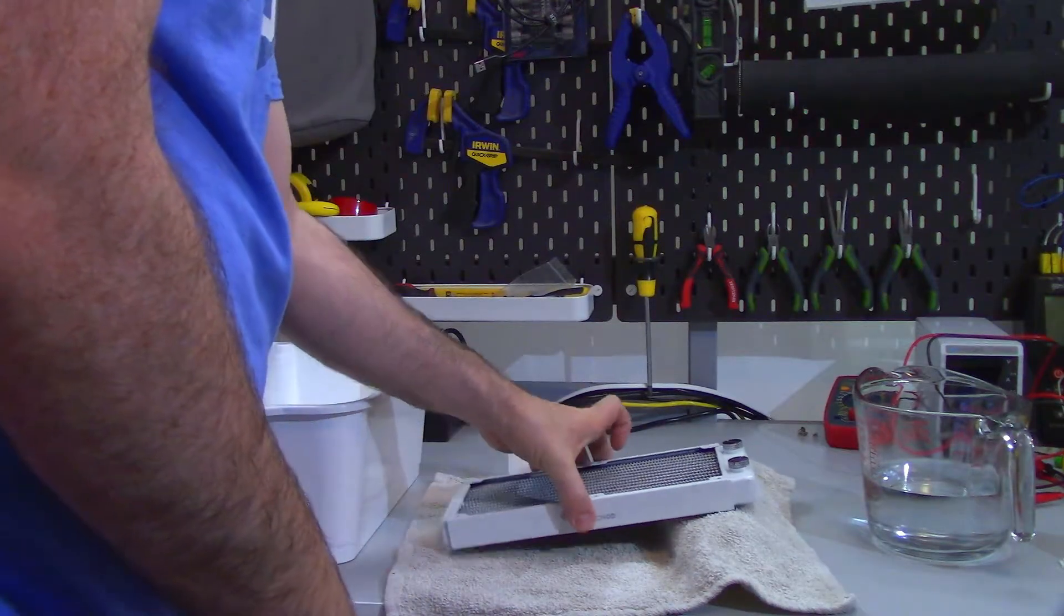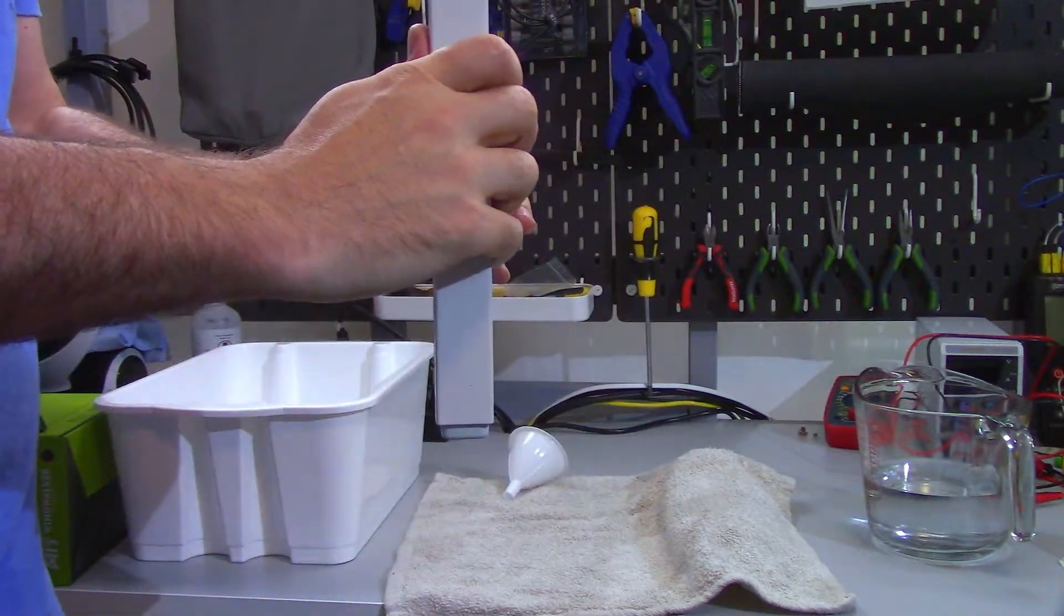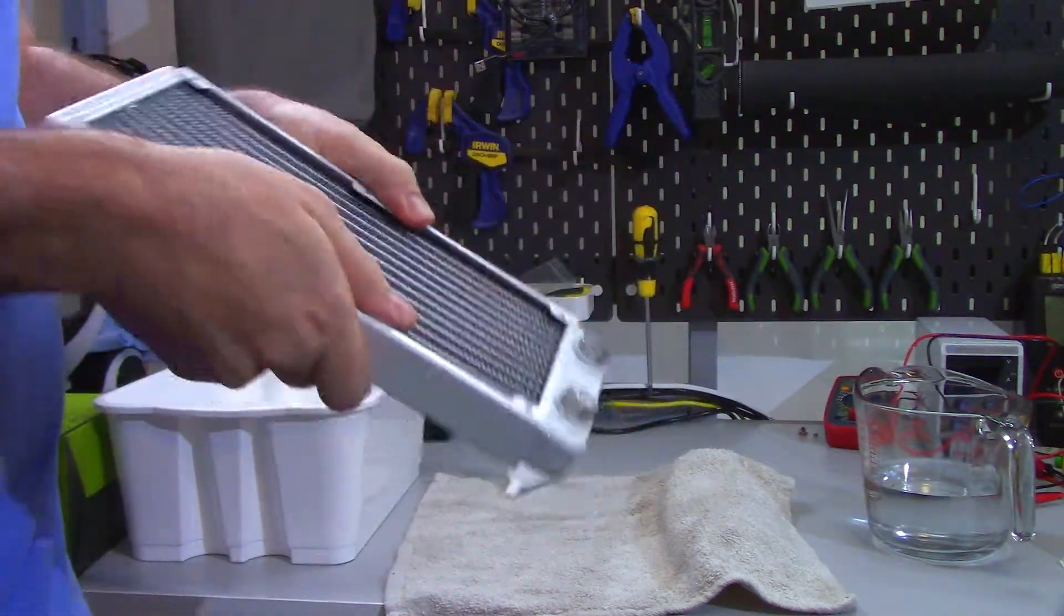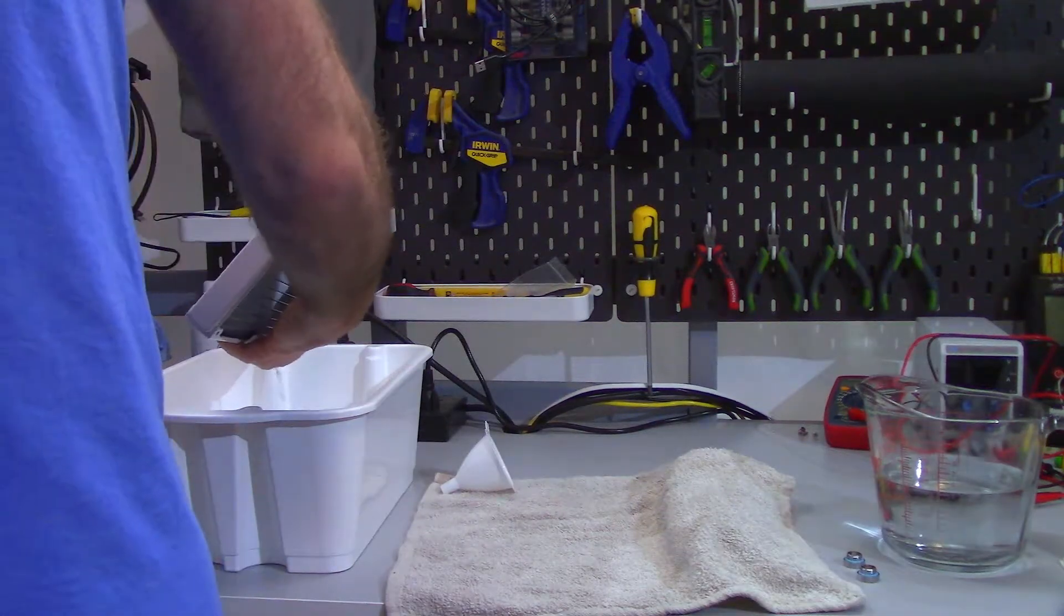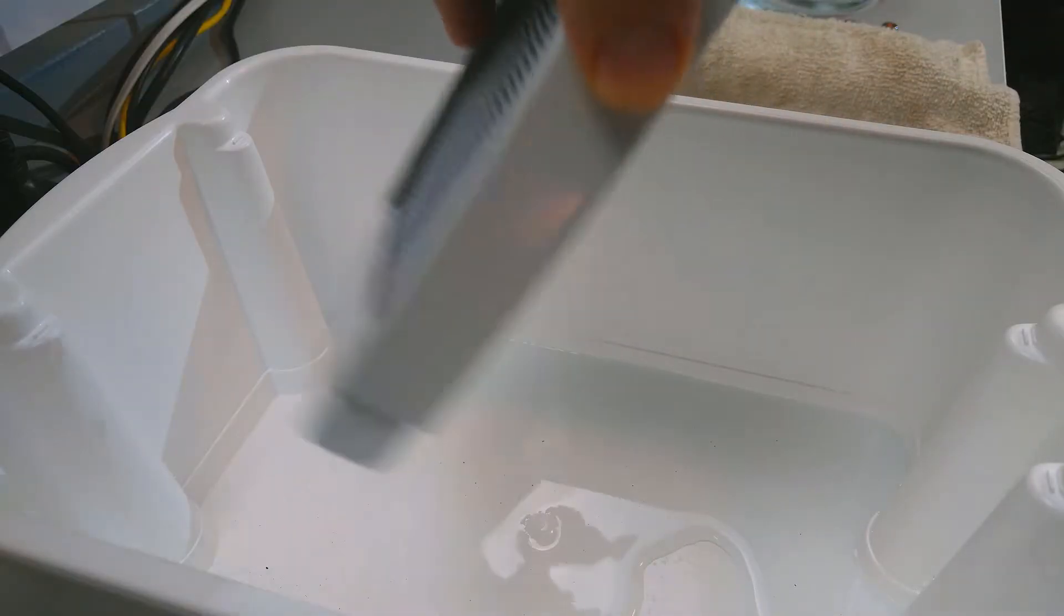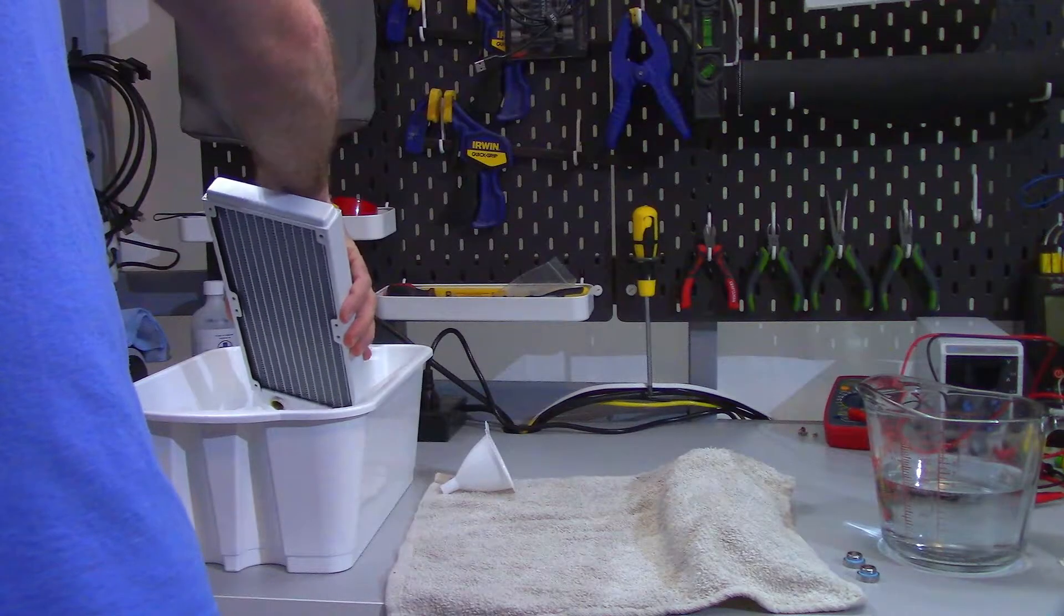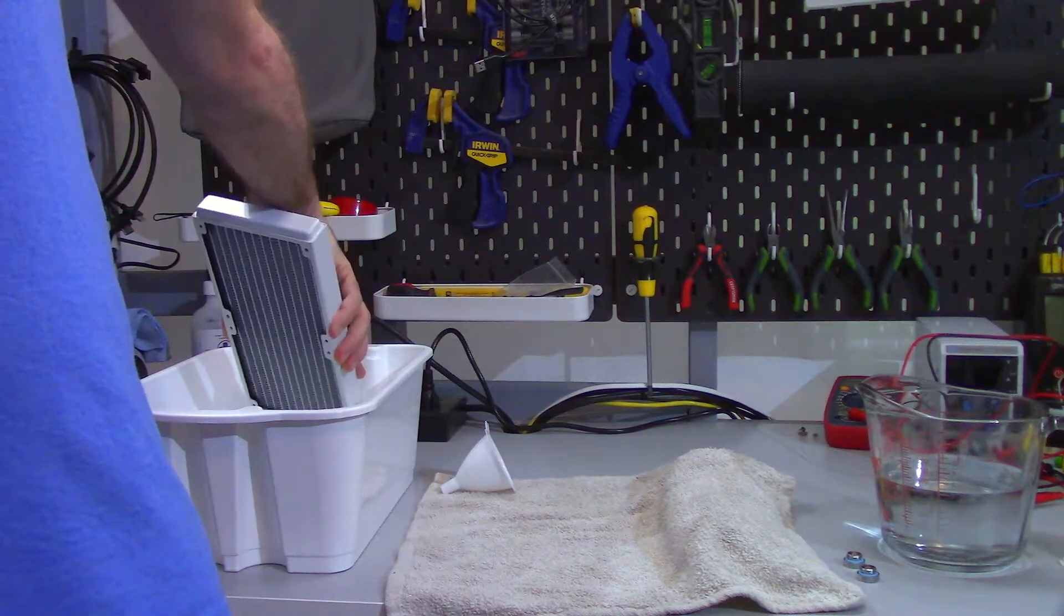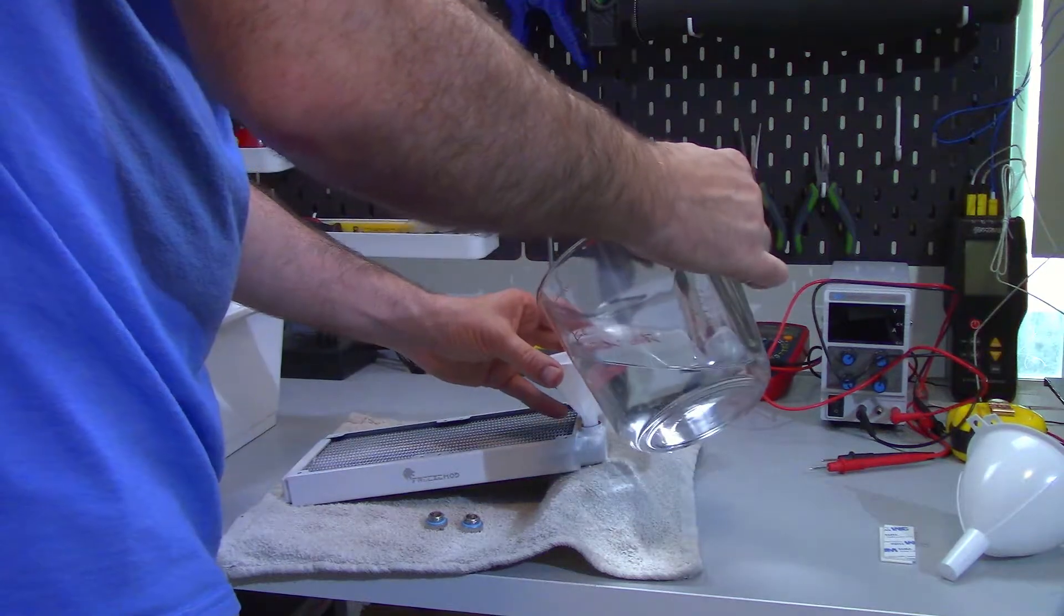Once I'm done shaking the radiator I'm going to let it sit for around 10 or so minutes. Okay it's been about 10 minutes now so I'm going to pick up the radiator and give it another shake for 60 or so seconds and then I'll empty the radiator into my bucket. As you can see there are a lot of little bits of stuff coming out of the radiator. This stuff is a bunch of things it can be anything from soldering flux to dust to flecks of metal.